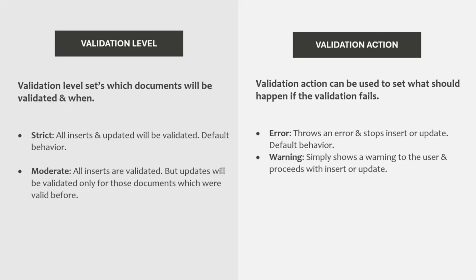We also have validation action, which sets what should happen if the validation fails. For example, if you have defined a schema on a collection and you try to insert a document that does not follow the schema, the schema validation will fail. Validation action can have two values: error or warning. If you set validation action to error, invalid data will not be inserted or updated and an error will be thrown. But if you set validation action to warning, the invalid data will be saved in the database and a warning message will be logged in a log file.